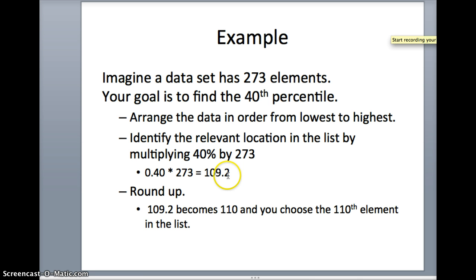If the number has a decimal, you just round up, and that's relatively easy for us to find. We go through the list, find the 110th element, that would give us the 40th percentile.